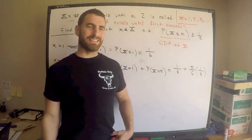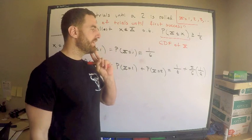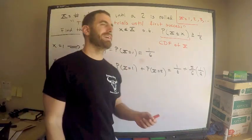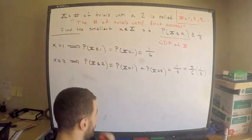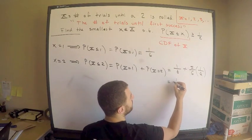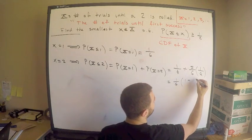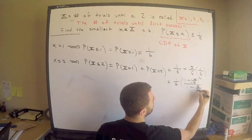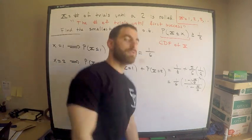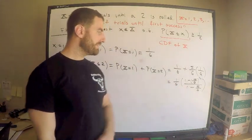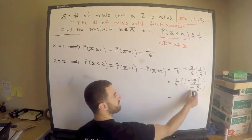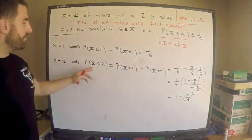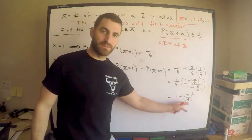One thing you need to know like the back of your hand for the preliminary exams is the formula for a geometric series, finite and infinite — and hopefully that gives you an idea of what kind of distribution this is. Factoring out one sixth and applying the geometric series, we get that the probability X is less than or equal to 2 equals one minus five sixths squared.